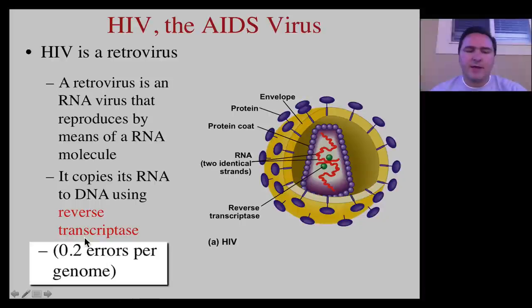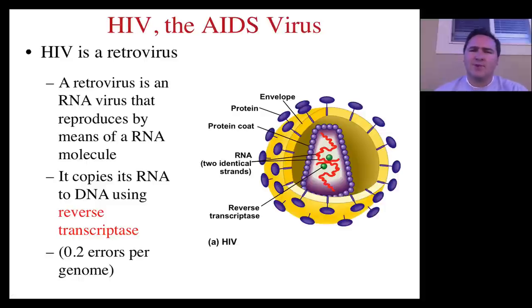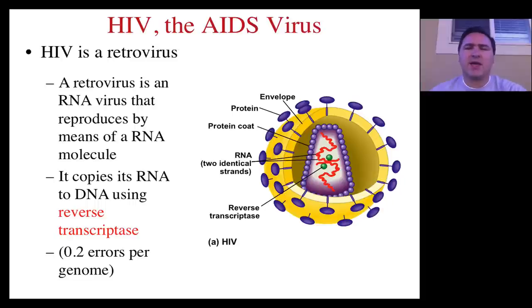So if you think about it, 0.2 errors per genome — that's basically 20% of all of the new viruses that are produced have some type of mutation in them. And this is what makes HIV so dangerous: it is a fast-evolving virus, constantly kicking out new forms of itself, making it hard for doctors to come up with ways to deal with these new viruses.